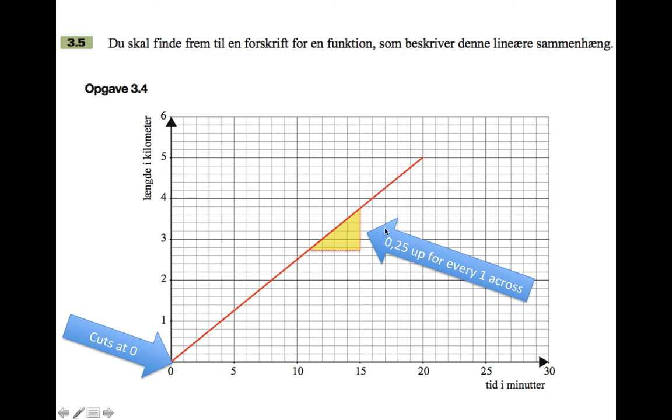So because it's gone 5 up for 20 across, I can figure out that it's going 0.25 up for every one across. And as I said, it cuts at zero. So the equation of the graph is going to be y equals 0.25 times x, where x is the time in minutes and y is the length in kilometers.